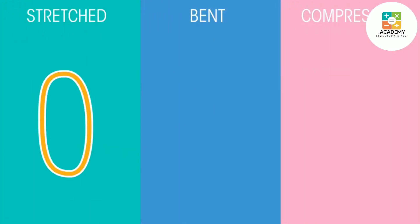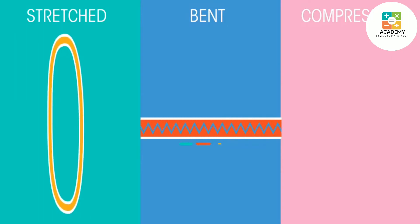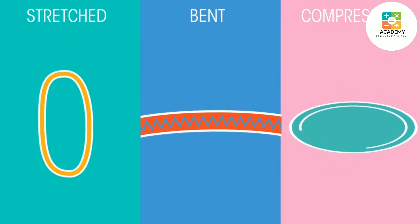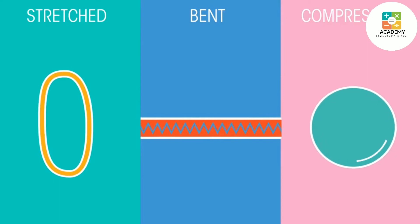Changes in shape can mean a variety of things. Objects can be stretched, bent, or compressed. When an object changes shape, we say it's deformed.